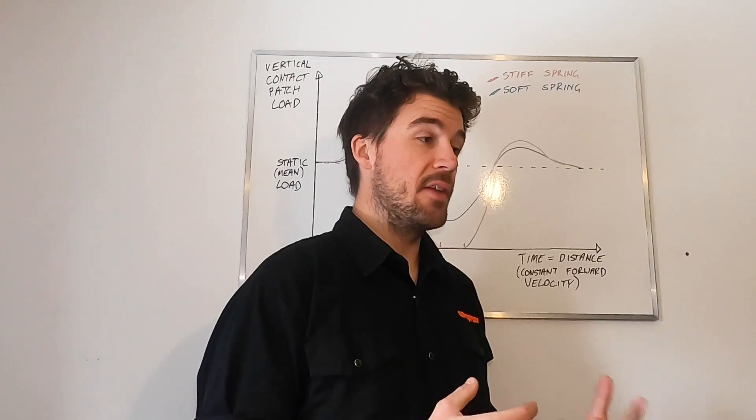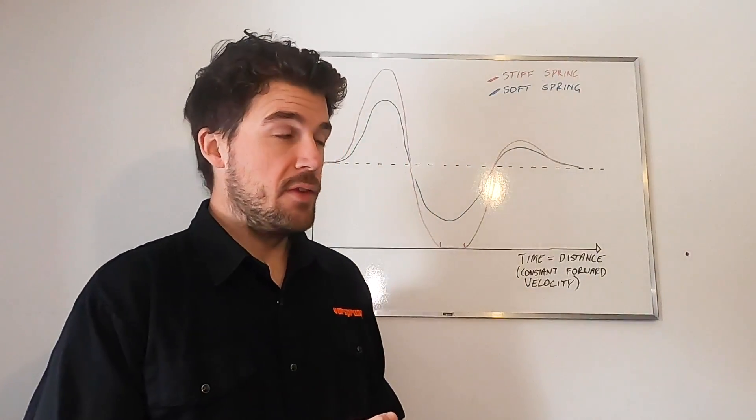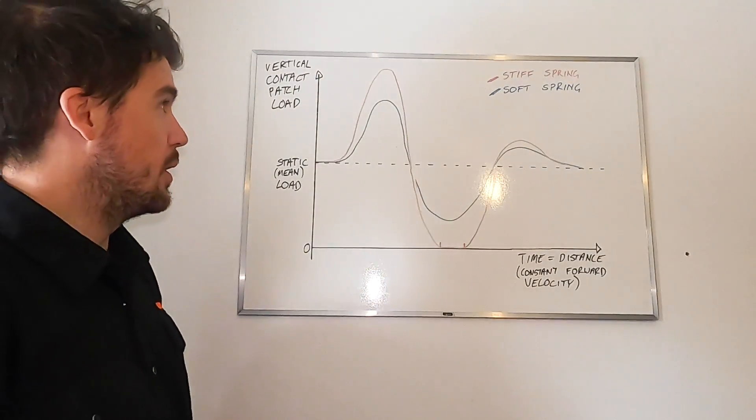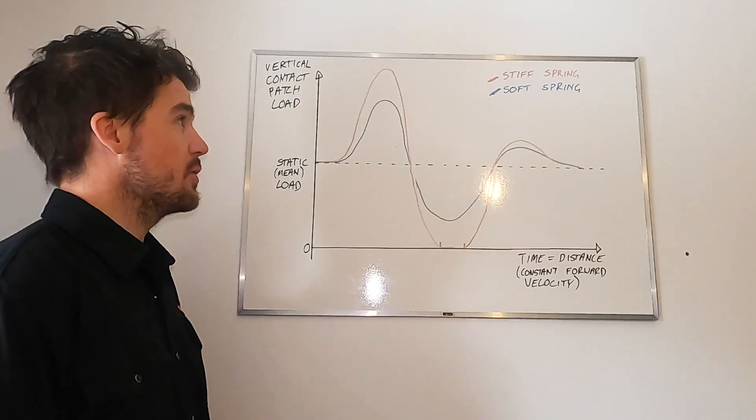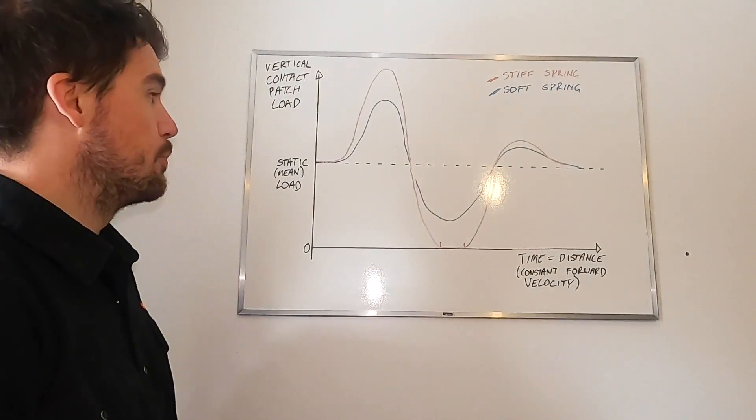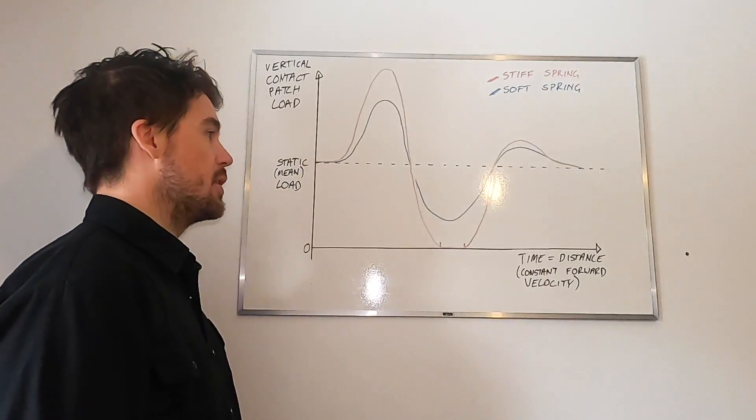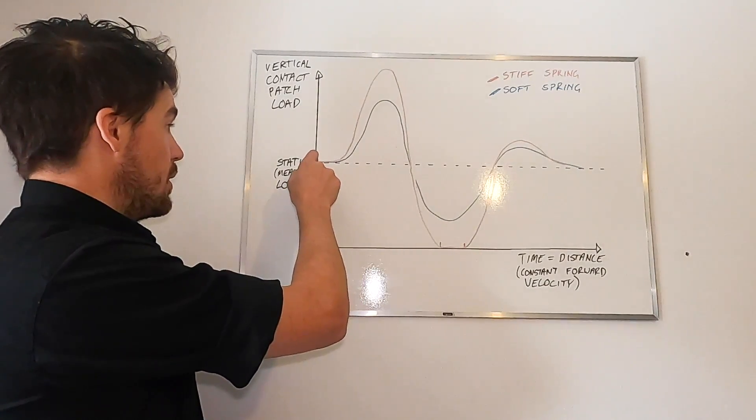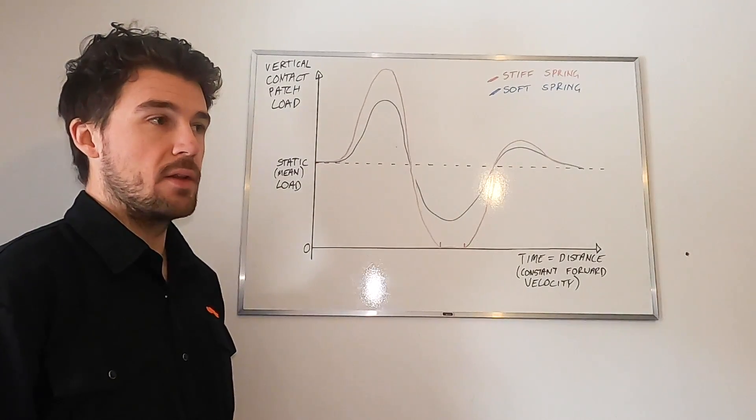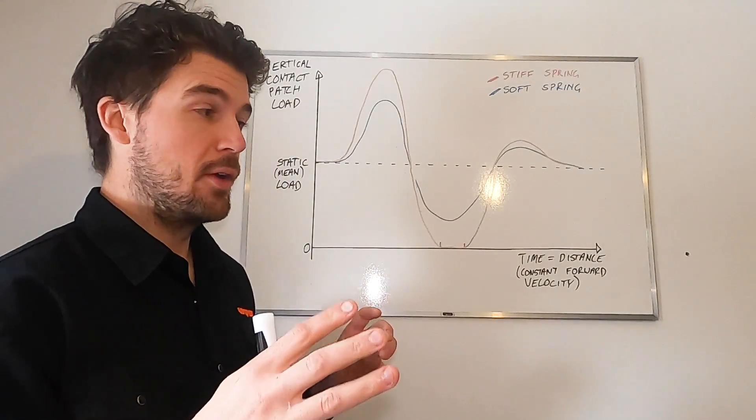Last week, we talked about steady state grip and how that's affected by weight distribution. So I'm going to run through a couple of different scenarios here where dynamic grip is relevant. What we've got here on the old whiteboard is essentially a graph that shows hitting a single bump followed by a trough, something like a braking bump over time with a stiff spring and a soft spring. These are arbitrarily stiff, arbitrarily soft. They don't mean anything numerically. What we have here is a static mean load. And what that means is essentially the amount of weight that would be on the wheel if you're just coasting along smooth ground.